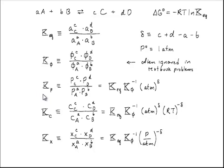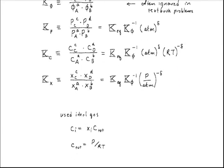If we want the ratio of partial pressures, then we would take those mole fractions within an ideal gas approximation. We have that x_i times the total concentration is the concentration of species i. Then multiplying the total concentration as p over RT, we find that x_i times p is a partial pressure. This is how we can interconvert between different forms.